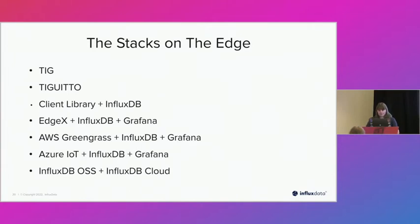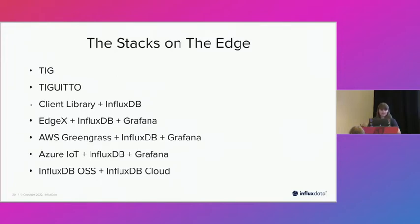When it comes to stacks on the edge, some options include the TIG stack — Telegraf, InfluxDB, and Grafana — which are used so often together they have their own name. There's also Tiguido, a Docker Compose script that sets up Telegraf and an MQTT broker for that common setup, built on top of the TIG stack. The client libraries allow you to code in your language of choice, most commonly Python. EdgeX plus InfluxDB plus Grafana, AWS Greengrass, and Azure IoT are all frameworks to get data from edge sensors to the cloud, and they all use InfluxDB on their edge gateways to provide a local dashboard. I'll be going more in-depth on InfluxDB open source to the cloud specifically.